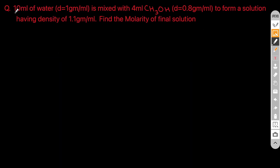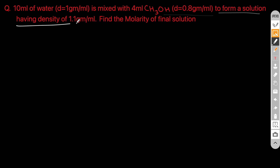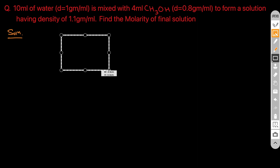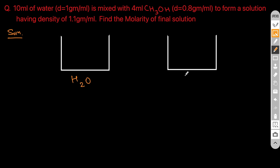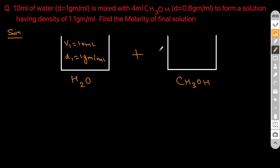Now solving a problem: 10 milliliters of water of density 1 gram per mL is mixed with 4 milliliters of CS3OH of density 0.8 gram per mL to form a solution of density 1.1 gram per mL. Find the molarity of the final solution. We'll draw two containers — water with volume 10 mL and density 1 g/mL, and CS3OH with volume 4 mL and density 0.8 g/mL.